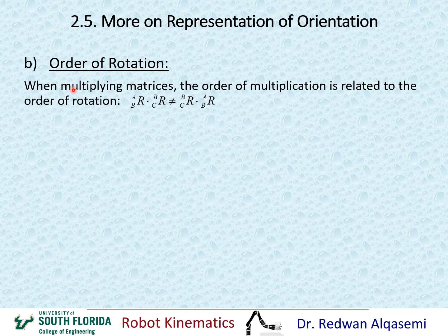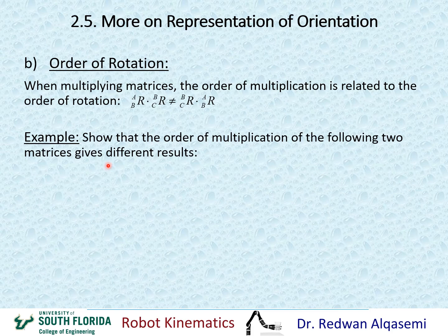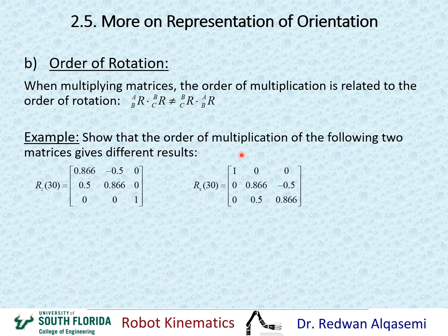Now let's talk about the order of rotation. When multiplying matrices, the order of multiplication is related to the order of rotation. When performing multiple rotations in sequence, rotation B relative to A multiplied by rotation C relative to B does not equal rotation C relative to B multiplied by rotation B relative to A. We cannot switch the order — the results would not be equal.